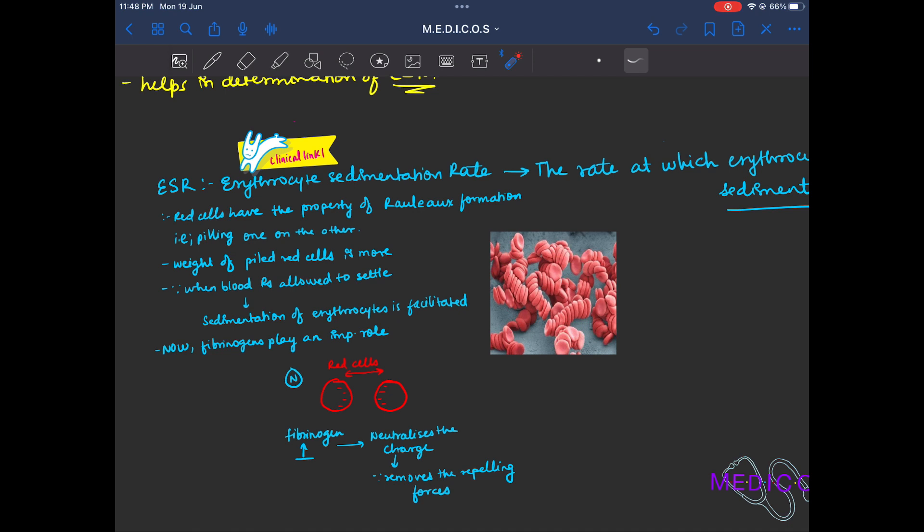The weight of the piled RBCs compared to the weight of the individual RBC - the weight of the piled RBC is more. When you allow the blood to settle, the piled RBCs will sediment. In normal cases, it is not normal because red cells have negative charge which will repel one red cell from another. But if fibrinogen increases it will neutralize and remove the repelling forces which will be the reason rouleaux formation will be promoted.